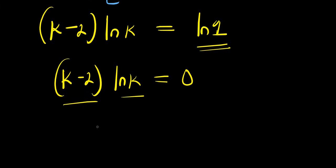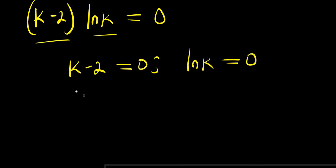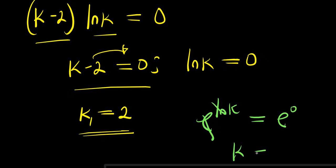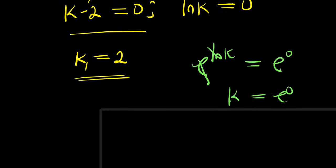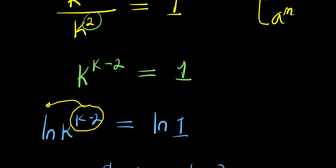Equating each factor to 0: k minus 2 equals 0 gives k equals 2 — that is k₁. For natural log of k equals 0, taking e of both sides gives e^(ln k) equals e^0, so k equals 1. We now have both values of k: 2 and 1.